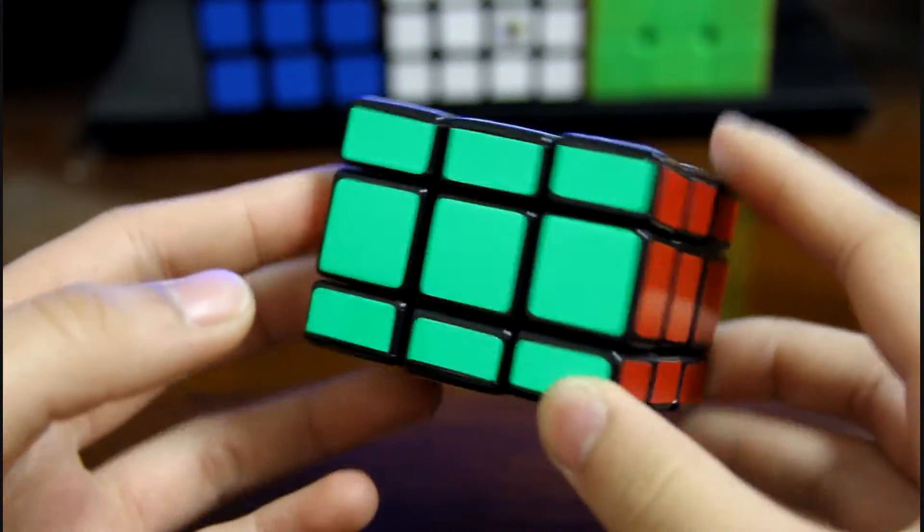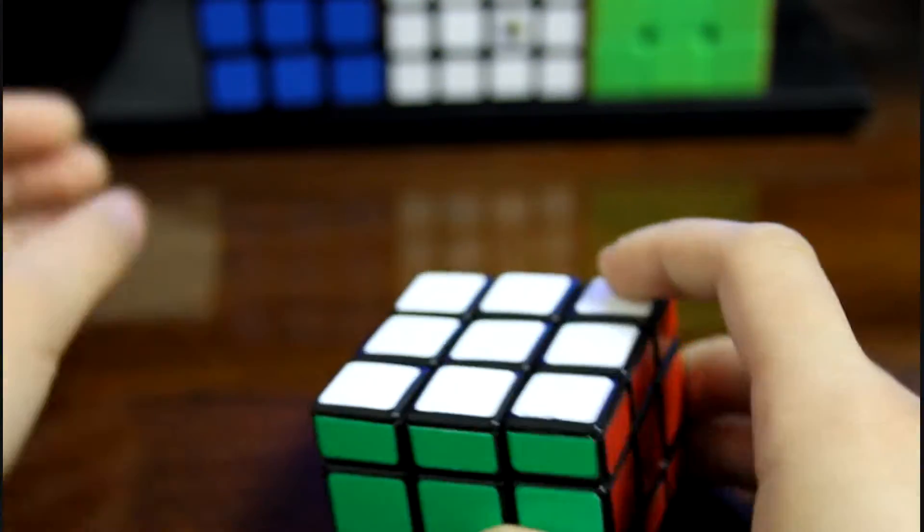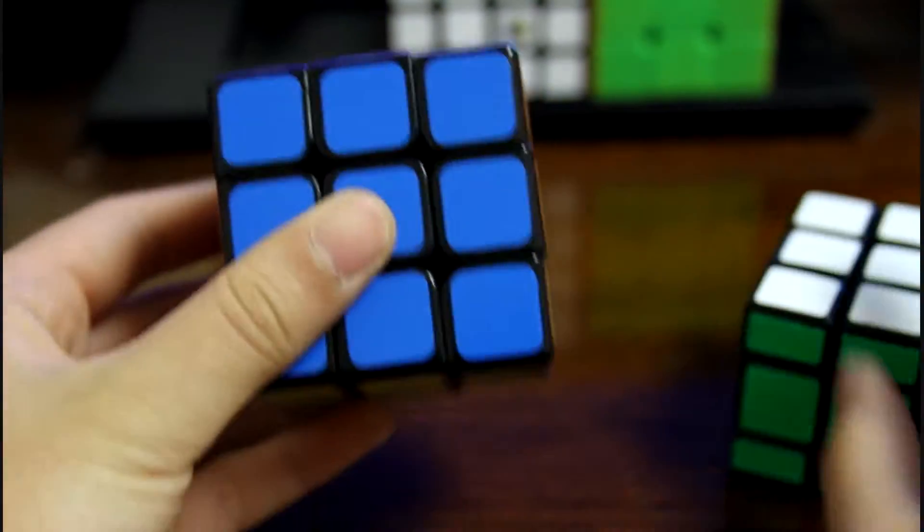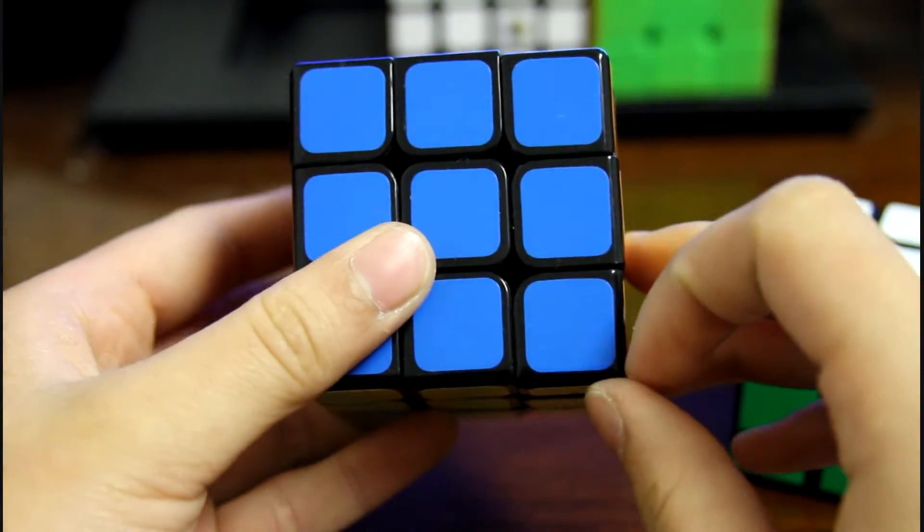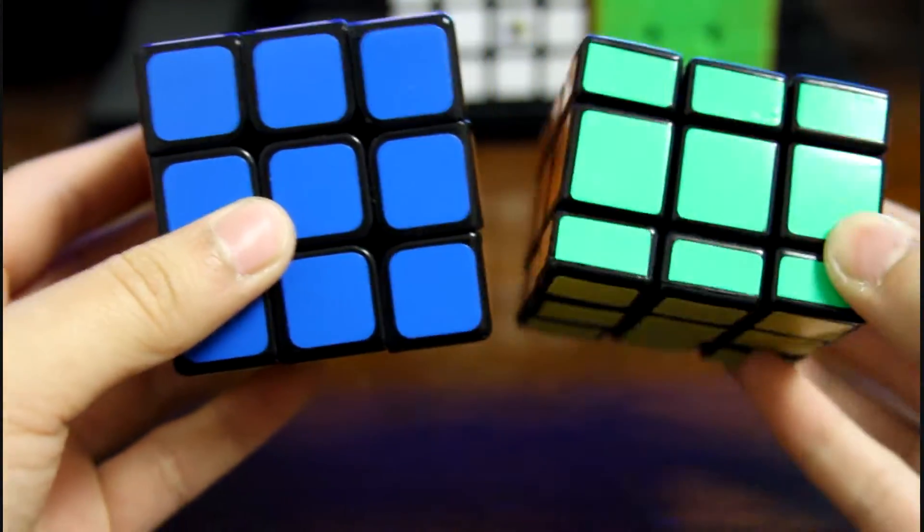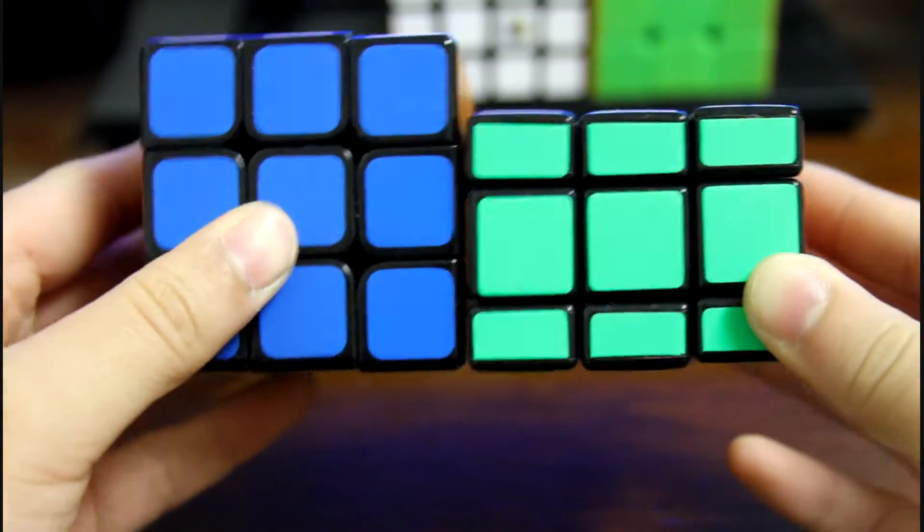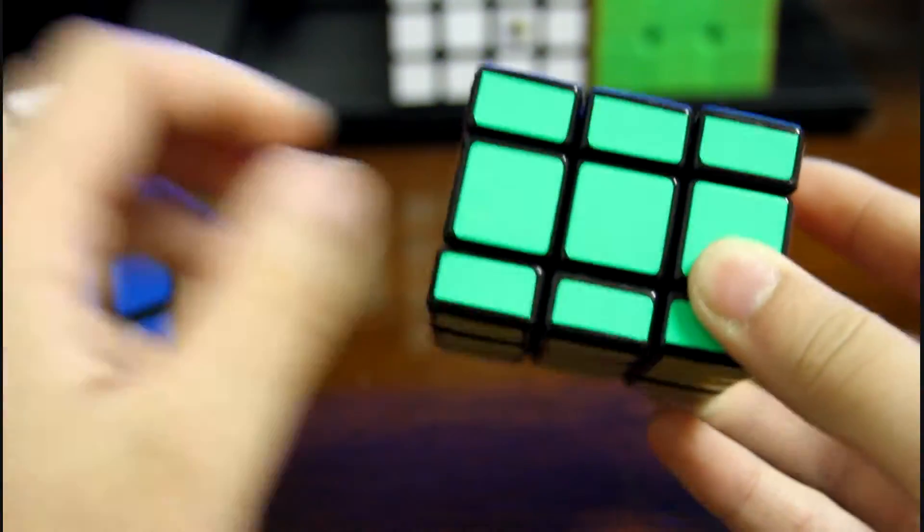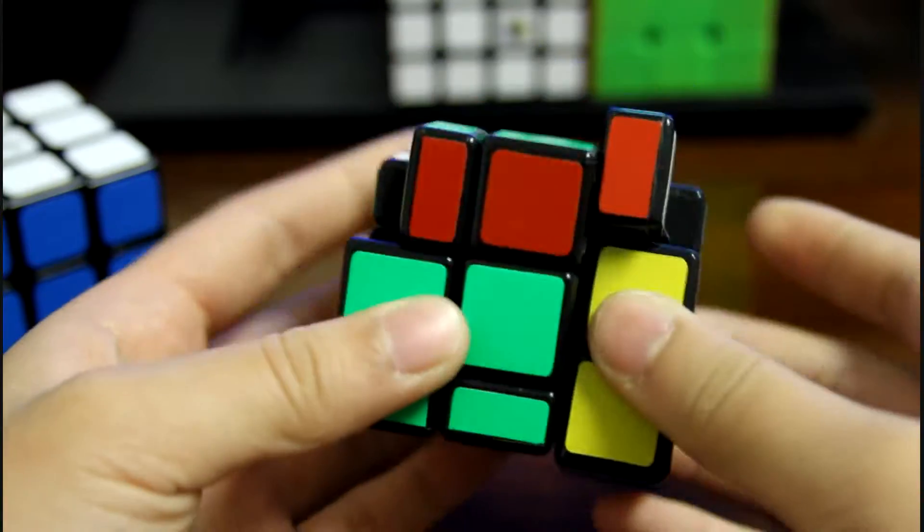So a 3x3 slim, for those of you that don't know, is basically a 3x3 with the top and bottom layers cut in half to give it this kind of proportionality. And what that does is creates this sort of shape-shifting movement.